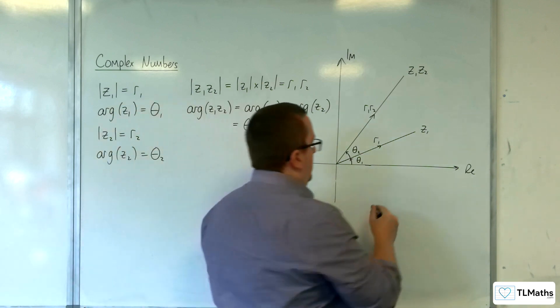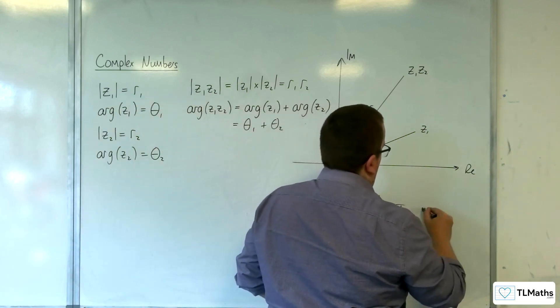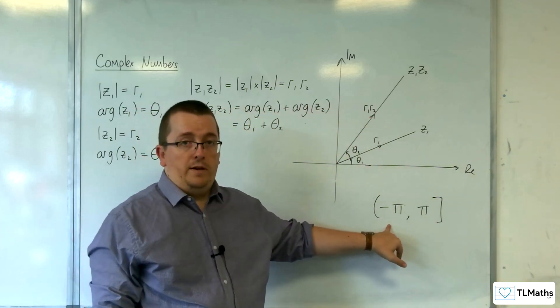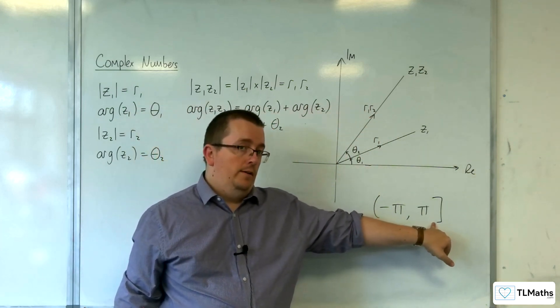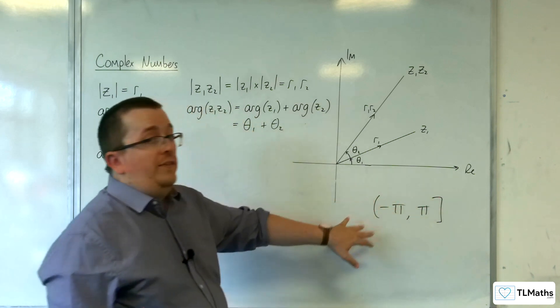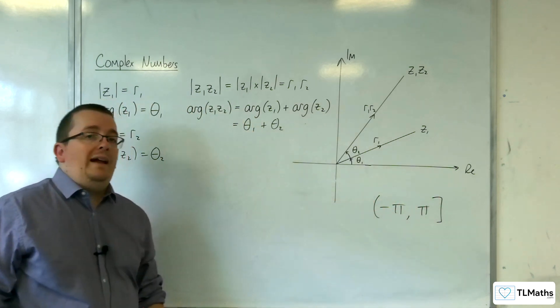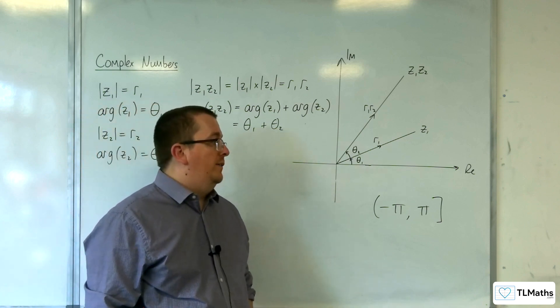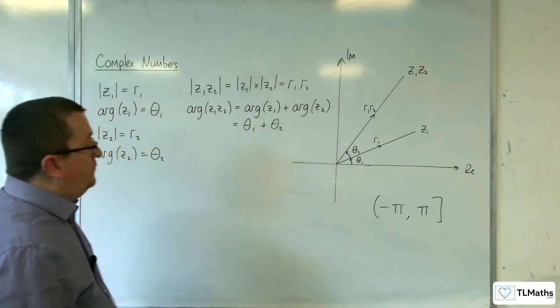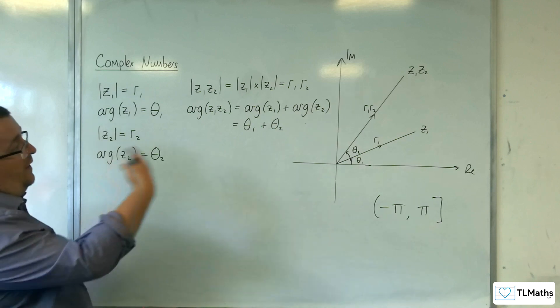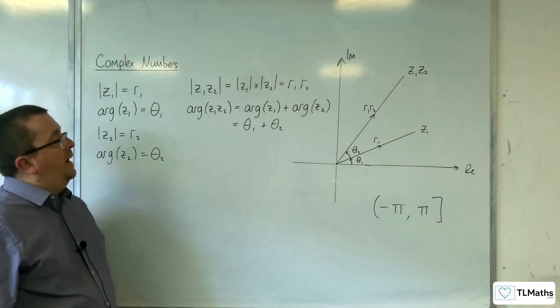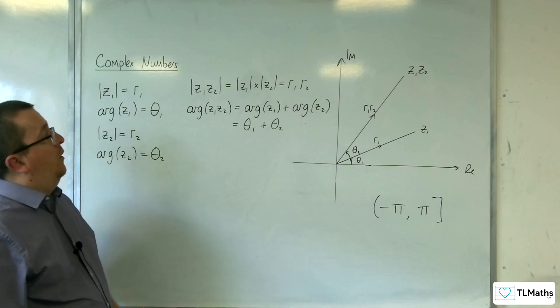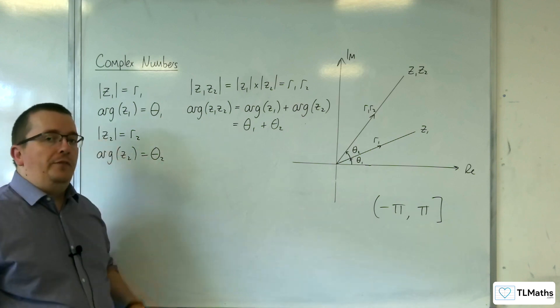Remember that the argument is greater than minus pi but less than or equal to pi. So if you get an answer that's out of that range, you may have to add or subtract 2 pi depending on where you're at. Otherwise, that is what we can consider, and I'll go through a proof of this in the next video.